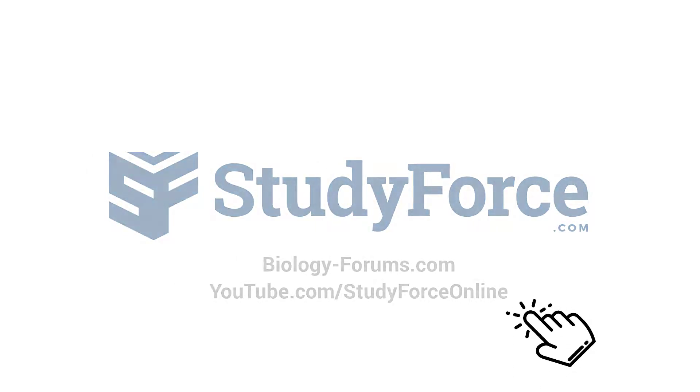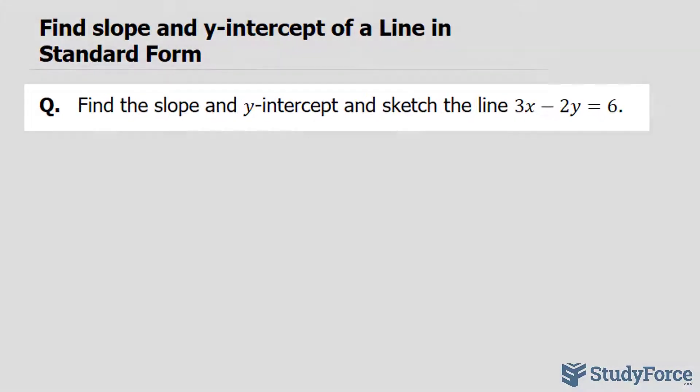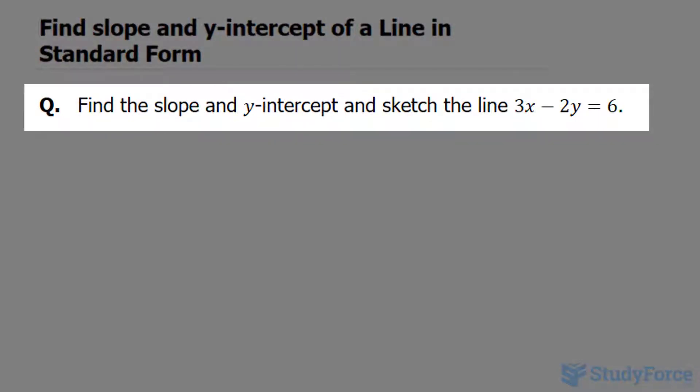In this lesson, I'll show you how to quickly find the slope and y-intercept of a line that's in standard form. The question reads: find the slope and y-intercept and sketch the line 3x minus 2y equals 6.